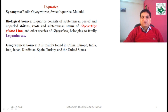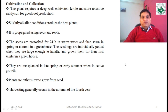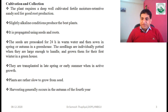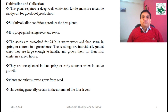In the biological source, you must include the useful parts, botanical name, and family. Regarding cultivation, the plant requires a deep, well-cultivated, fertile, moisture-retentive sandy soil for good production. The soil must retain good moisture, be sandy in type, and should also be alkaline in nature to produce good quality plant material.